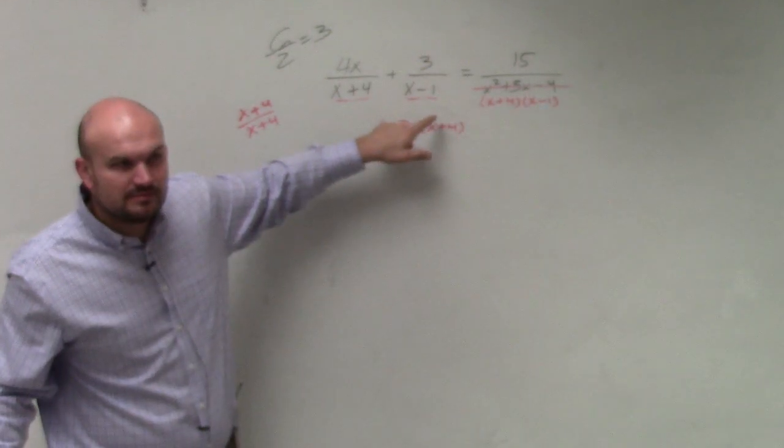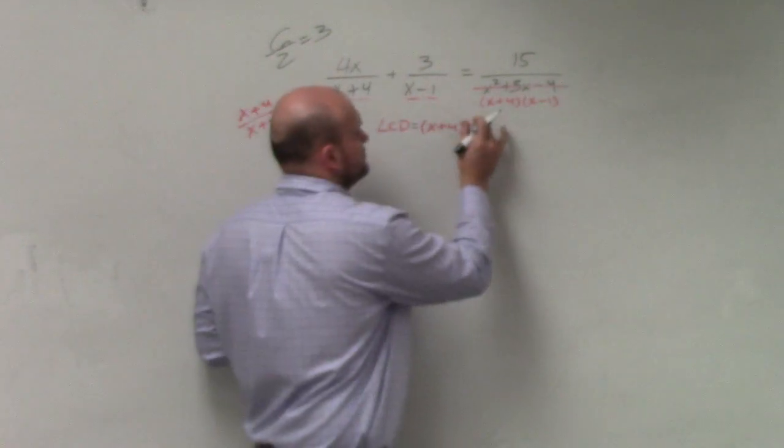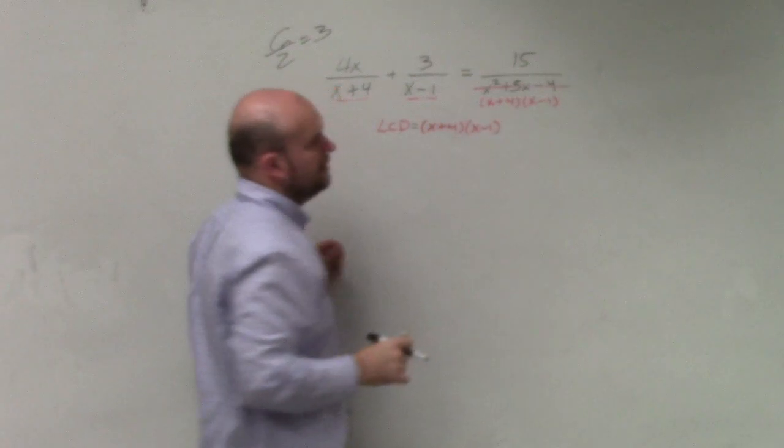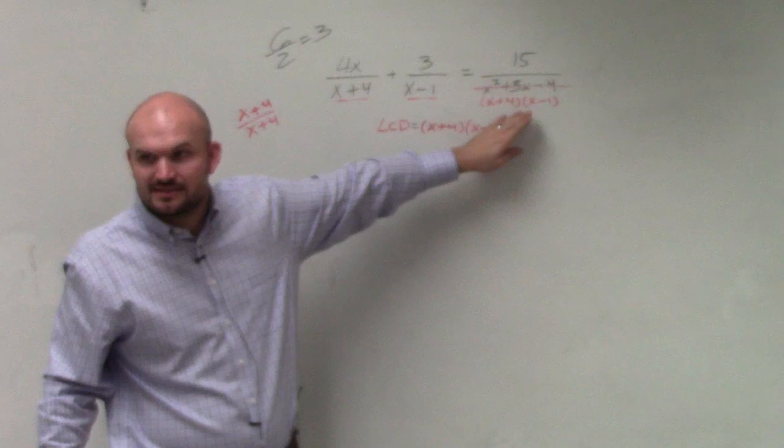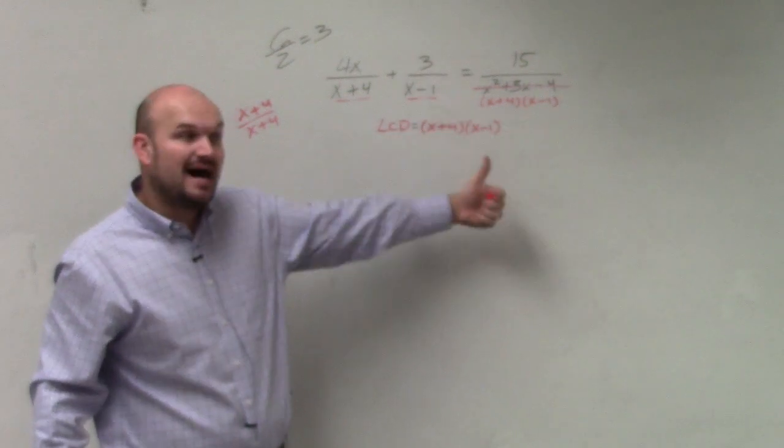So what should we write for x minus 1? x minus 1. All right. And then, if you notice, we don't have to add these because they're redundant, right? They're duplicates.